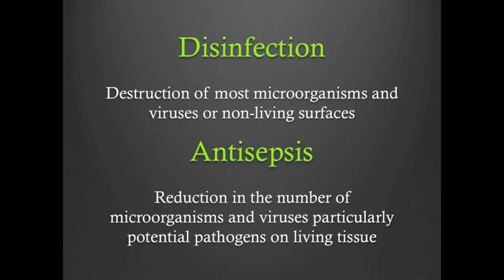Antisepsis, on the other hand, is the removal of vegetative pathogens on living tissues. Chemicals used for antisepsis are known as antiseptics. There are some chemicals that may act as disinfectants or antiseptics depending on the situation in which they are used. However, many of the chemicals used as disinfectants are simply too harsh to utilize on living tissues and therefore are only employed to disinfect inanimate objects.